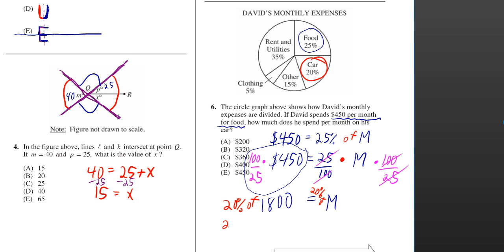Well, 20% is the same thing as 20 over 100. Of is the same thing as multiply.